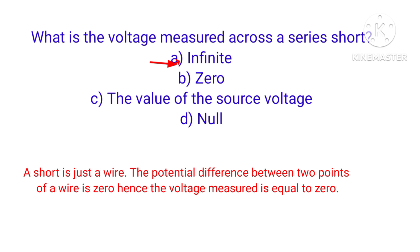What is the voltage measured across a series short circuit? A short circuit is just a wire. The potential difference between two points of a wire is zero; hence the voltage measured across a short is equal to zero.